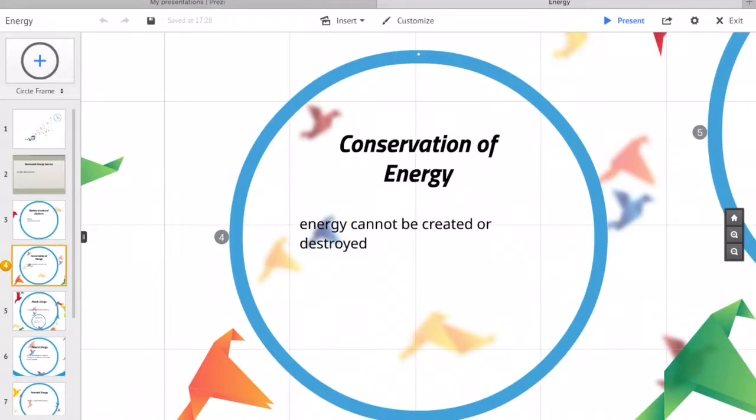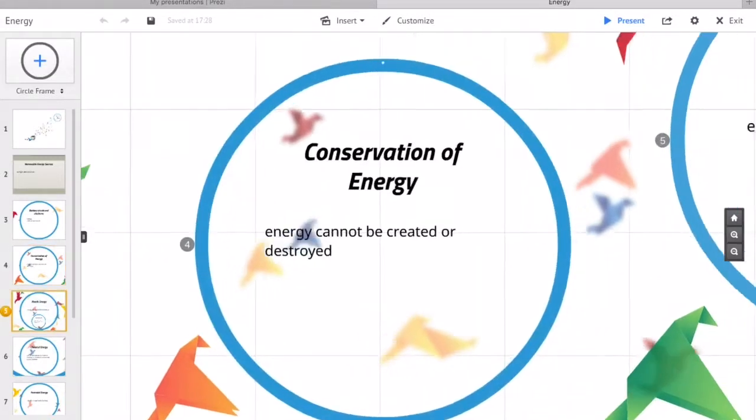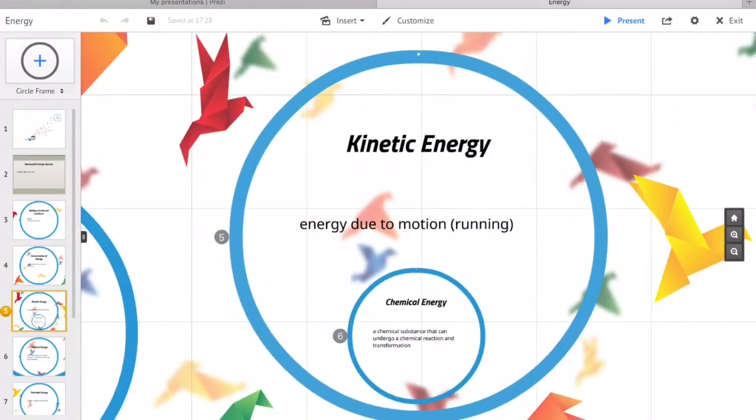Kinetic energy is energy that an object possesses due to its motion. Examples of that would be running or riding a bicycle.